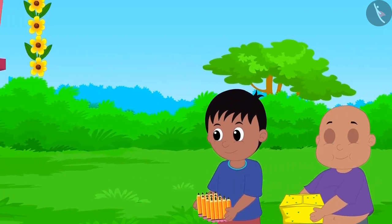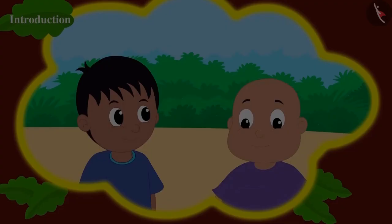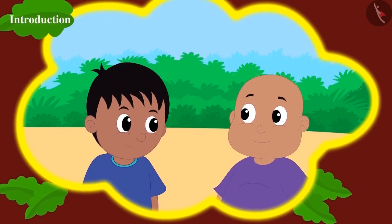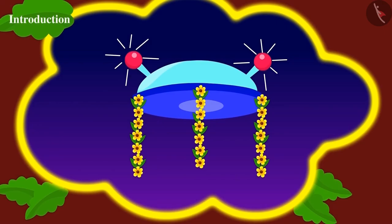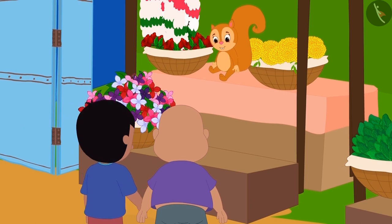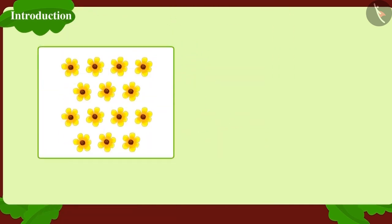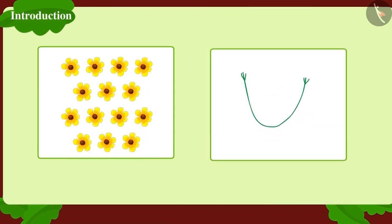When Raju and Bablu reached home with all the things, they saw that their house was decorated with beautiful festoons. They thought: why not buy some festoons to decorate Jeev's flying saucer as well? They quickly ran to Chanda's flower shop. Chanda makes each festoon with a bunch of seven flowers. If Raju and Bablu want to decorate Jeev's flying saucer with 14 flowers, how many festoons will they have to buy?